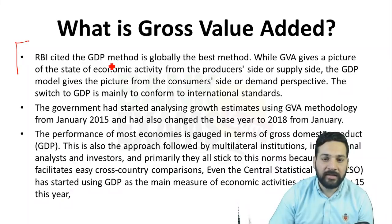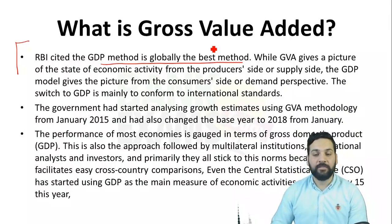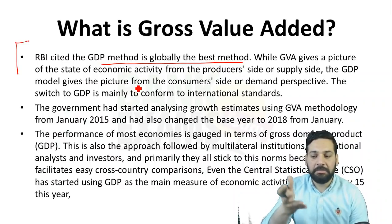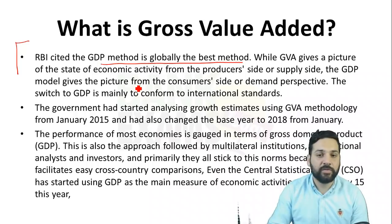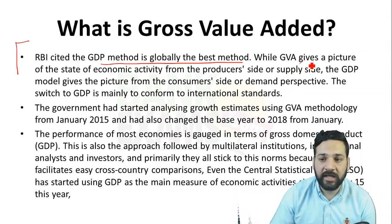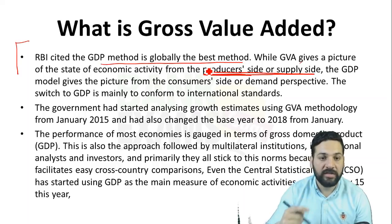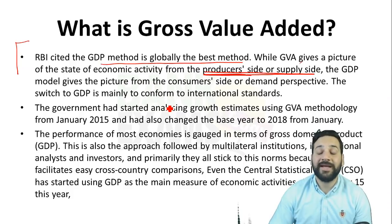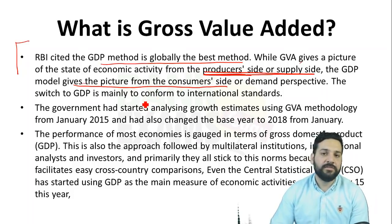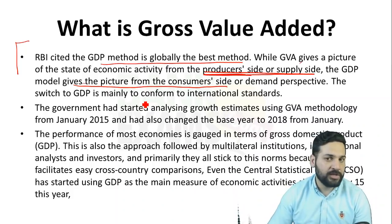RBI cited that the GDP method is the globally best method. Most countries around the world use the GDP method, whereas India had picked the GVA method. This makes it difficult to compare India's growth rate with that of China, Sri Lanka, or Pakistan — you can only compare apples with apples. While GVA gives a clearer picture from the producer side, GDP gives a clear picture from the consumer side, and since GDP is a global standard adopted by most international financial institutions and developed and developing nations, it was readopted.